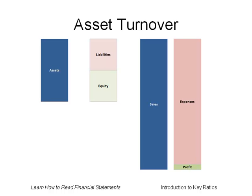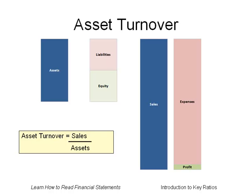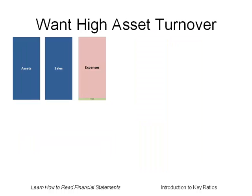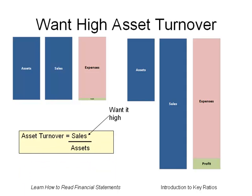Asset turnover measures your ability to generate sales from your assets. Asset turnover is equal to sales divided by assets. You want a high asset turnover — in other words, you want to generate high sales from your assets. Consider the diagram here: your assets generate a like amount of sales and a little sliver of profit. Now consider the diagram on the right, which from the same asset level generates much higher sales and profits. The more sales you have, the more profits you have. You want to generate high sales from your assets, as shown in the diagram to the right. Asset turnover is sales divided by assets — you want the top part of the fraction, sales, to be high relative to the bottom part of the fraction.